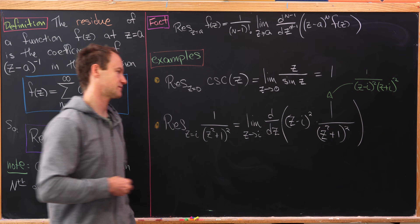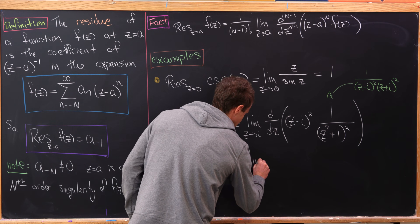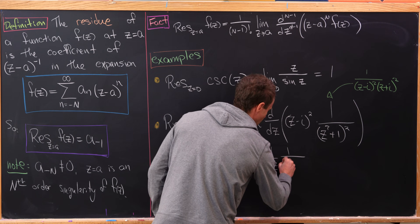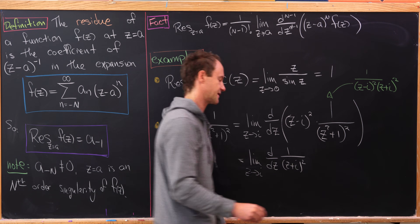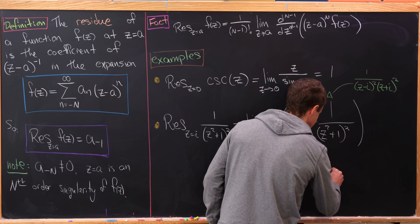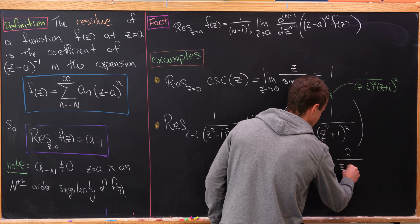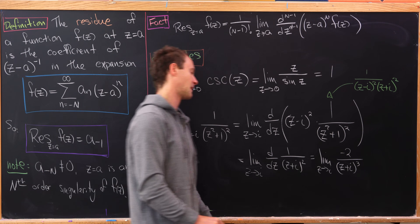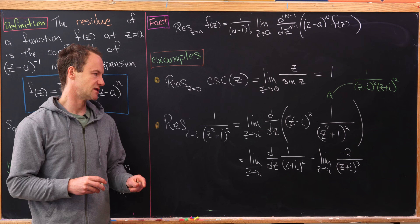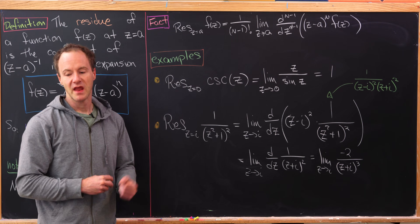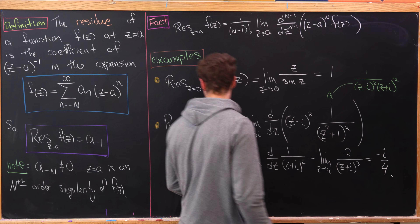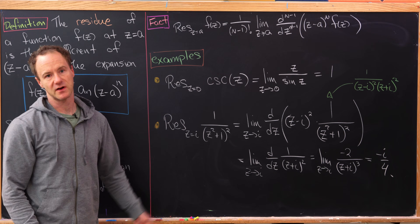The (z minus i) terms cancel, leaving us with the limit as z approaches i of the derivative of 1 over (z plus i)². Taking that derivative gives the limit as z goes to i of negative 2 over (z plus i)³. Plugging in z equals i — there's no issue with zeros in the denominator — and doing the arithmetic gives the residue as negative i over 4.